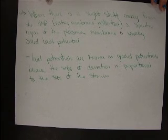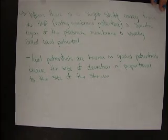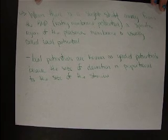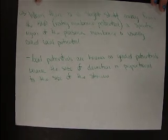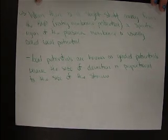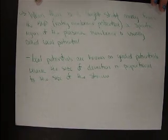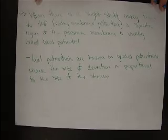When there's a slight shift away from the resting membrane potential (RMP), a specific region of the plasma membrane is usually called a local potential. Local potentials are known as graded potentials because the size of deviation is proportional to the size of the stimulus.